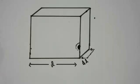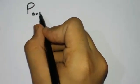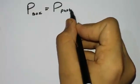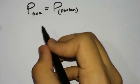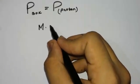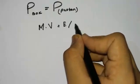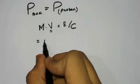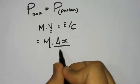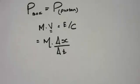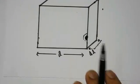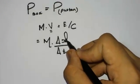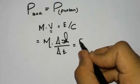Now we balance the momentum of the photon and the box. Momentum of box equals momentum of photon, so M times V equals E divided by C. Since velocity V equals displacement over time, we write M times DL over DT equals E over C, where DL is the recoil distance of the box.